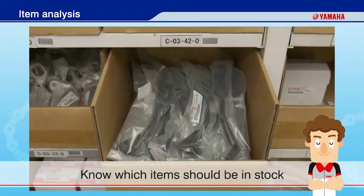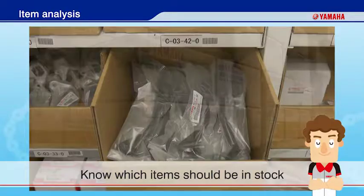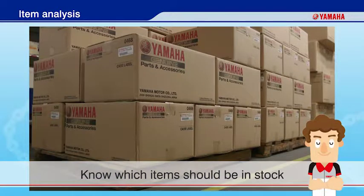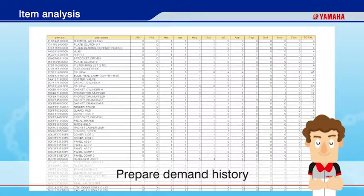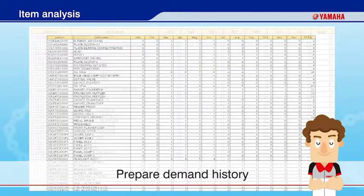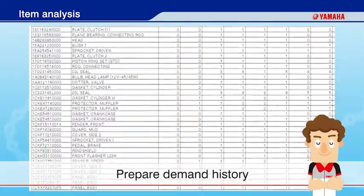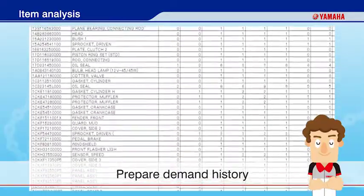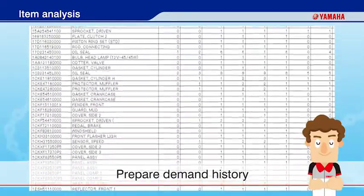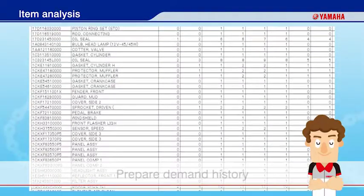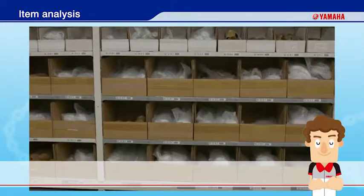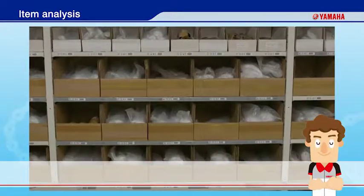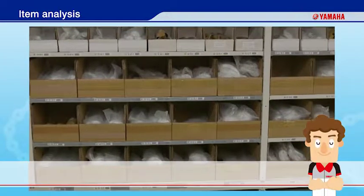The first step is to determine which items and how many pieces to stock. Determine this based on the demand history. Demand history can be utilized as valuable data in a variety of situations in your parts operation. You should sort parts to stock based on the demand history, using something called ABC analysis.